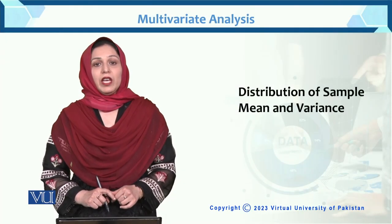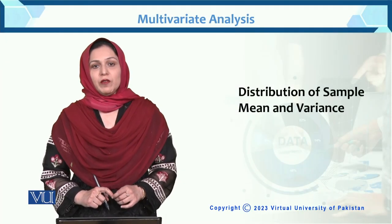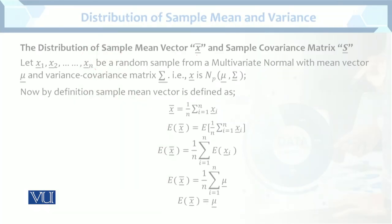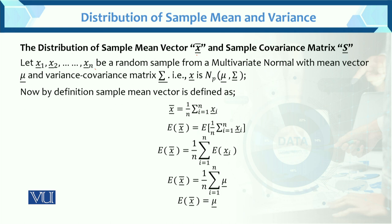Dear student, today we are going to learn the distribution of sample mean and the sample variance — specifically the distribution of sample mean vector x̄ and the sample covariance matrix S. Let x₁, x₂, ..., xₙ be a random sample from a multivariate normal with mean vector μ and variance-covariance matrix Σ. That is, x is distributed as multivariate normal with mean vector μ and variance-covariance matrix Σ.